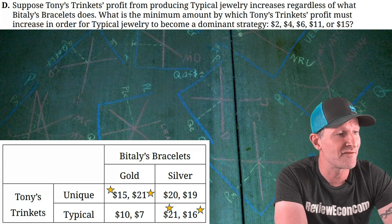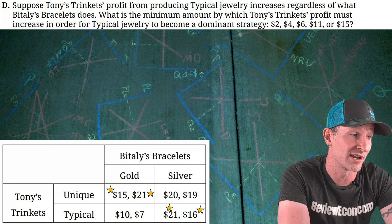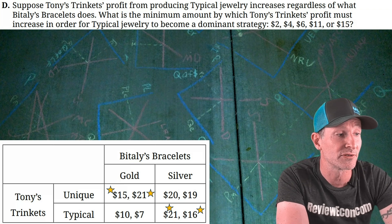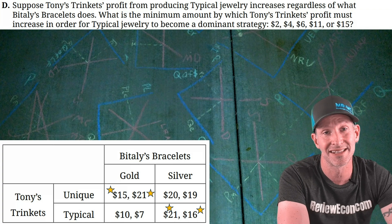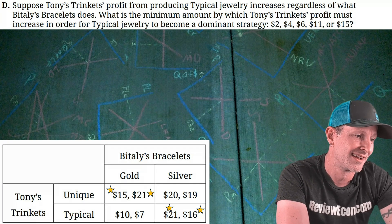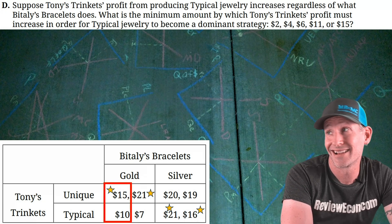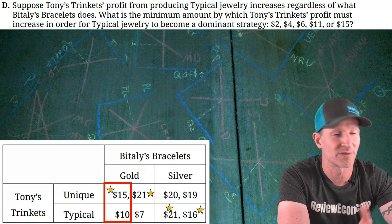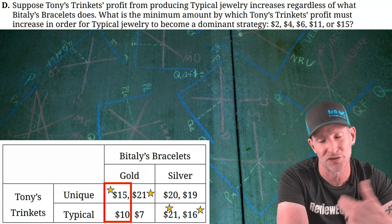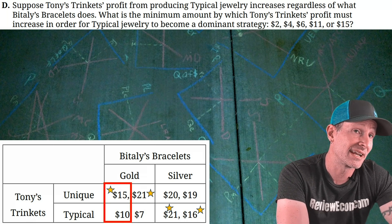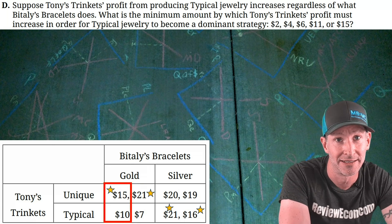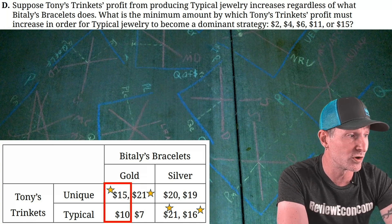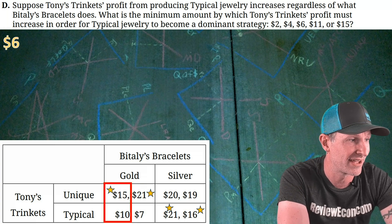Part D: suppose Tony's profit from typical jewelry increases regardless of what Bitly does. What is the minimum increase needed for typical to become Tony's dominant strategy? The relevant case is when Bitly chooses gold — Tony currently earns $15 for unique and $10 for typical. Tony needs typical to exceed $15, so profit must increase by at least $6 (bringing typical to $16). Answer: $6.